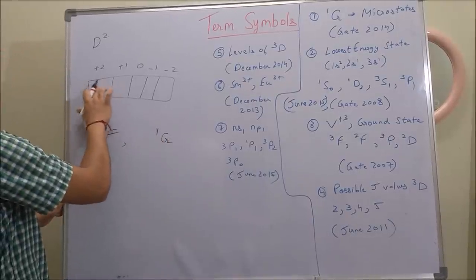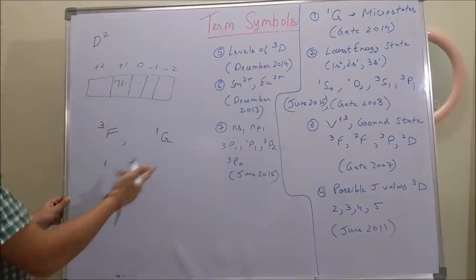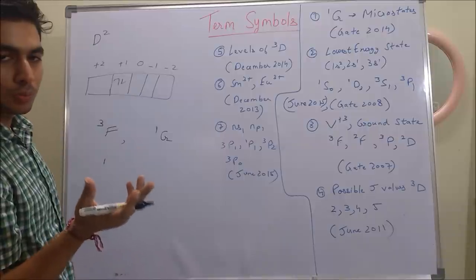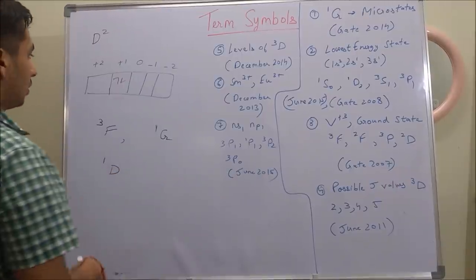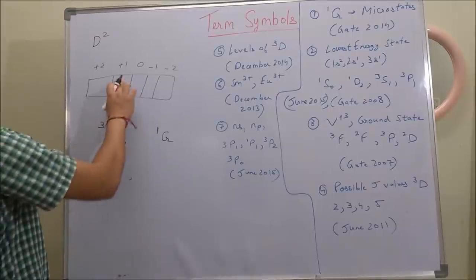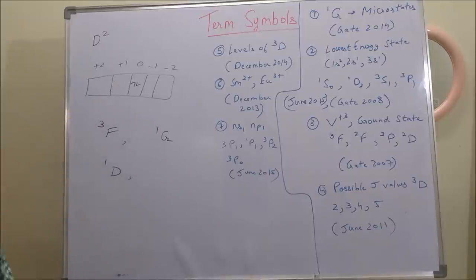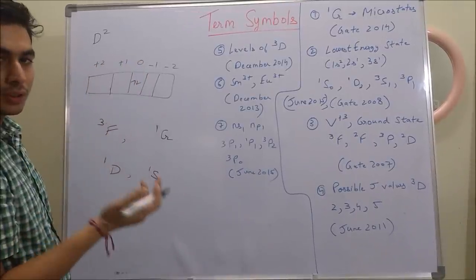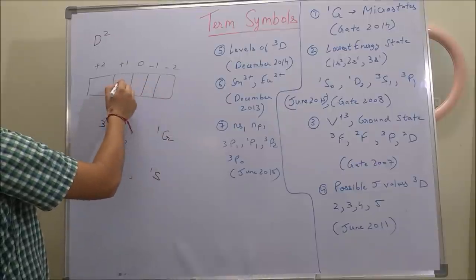Other possibilities for D2: both electrons in +1 with paired spins — multiplicity = 1, total ml = +2 (D), giving 1D. Both electrons in 0 with paired spins — multiplicity = 1, total ml = 0 (S), giving 1S. One electron in +1 and one in 0 with parallel spins — S = 1, multiplicity = 3, total ml = +1 (P), giving 3P. So there are five possible terms for D2: 3F, 1G, 1D, 1S, and 3P.